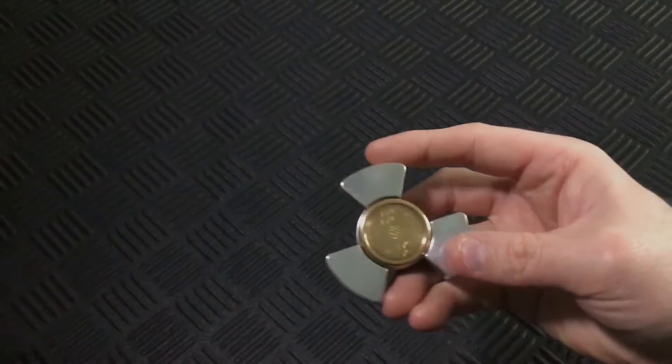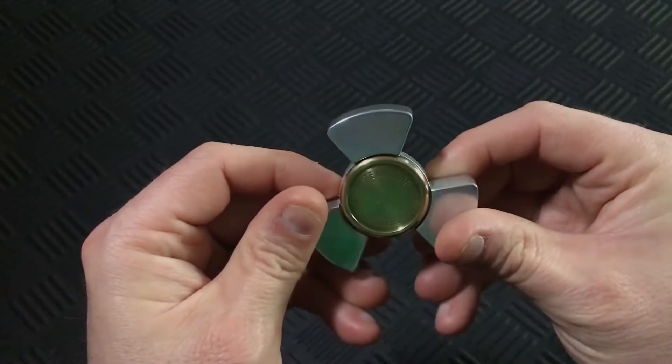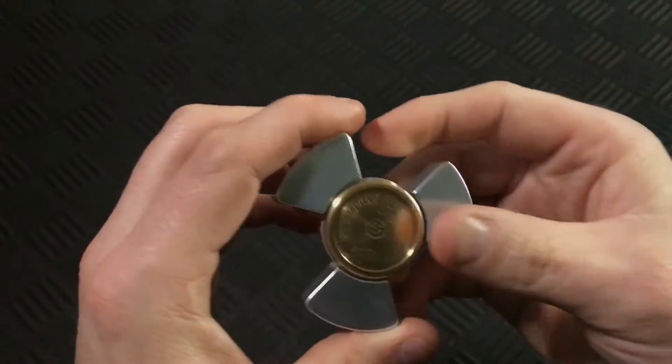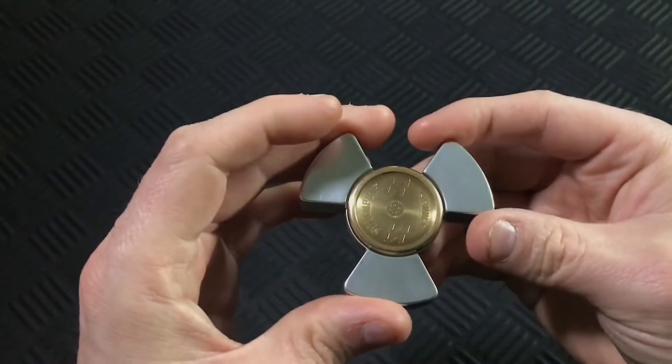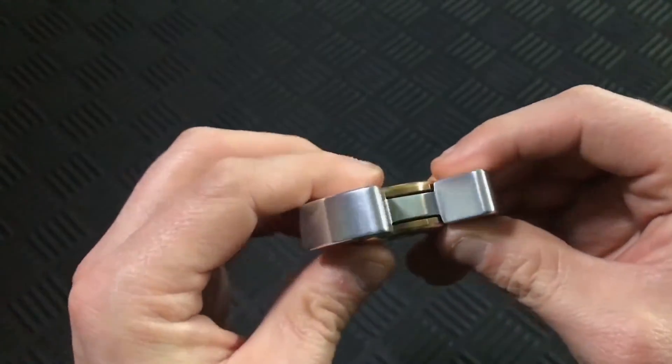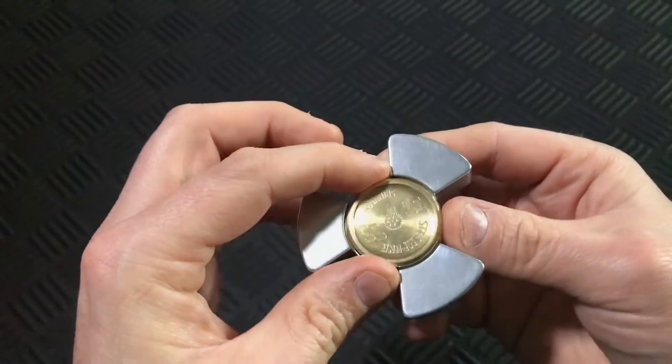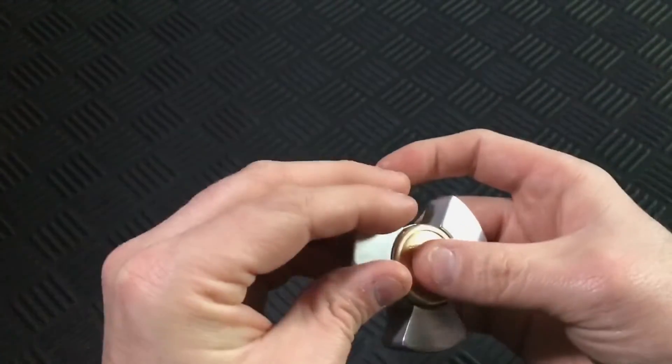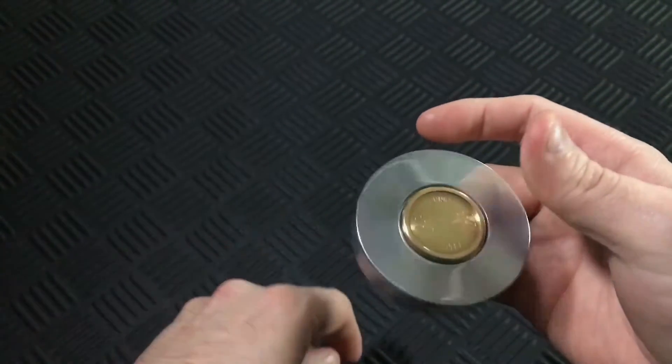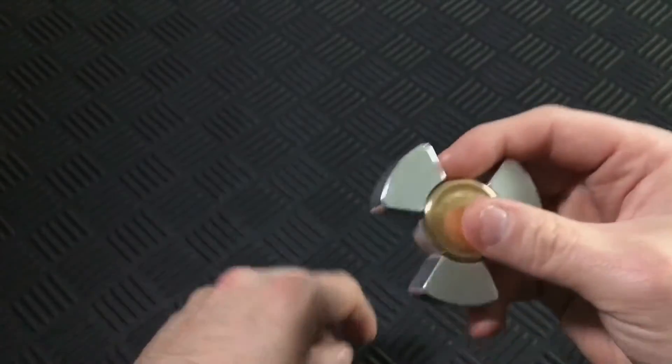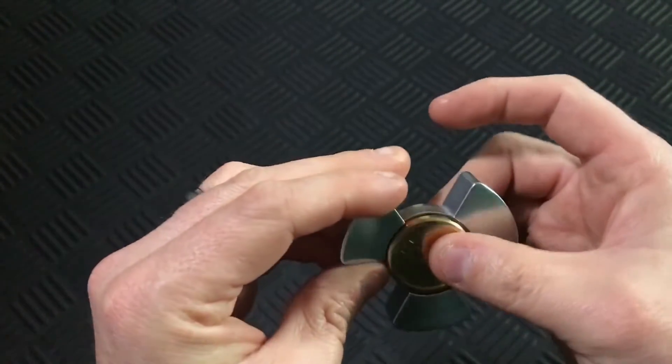That leads us into the Fat Boy by Steampunk Spinners. This one is my most recent love affair, as I just did a review for this. And I really love this half inch thick aluminum body and these really large brass buttons. This is the only 608 bearing spinner to make the cut, and it does so because it feels awesome and is a real joy to fidget with.